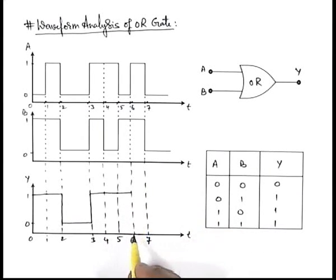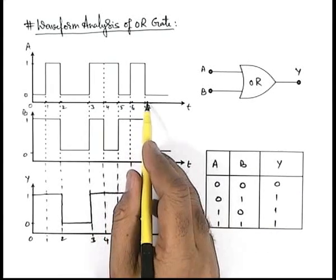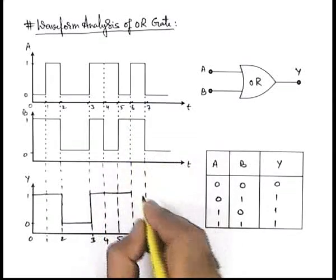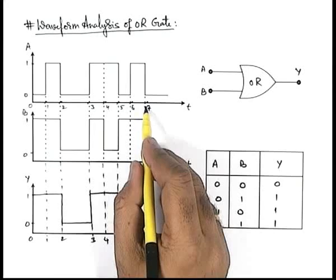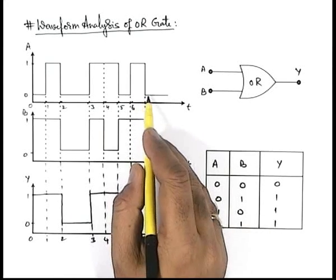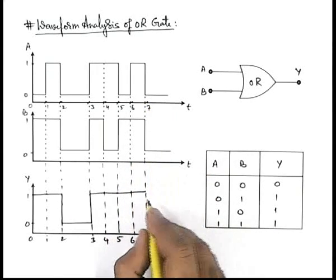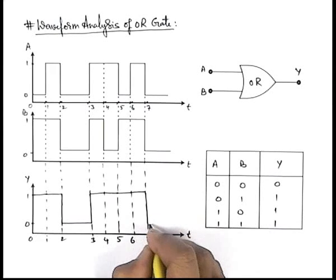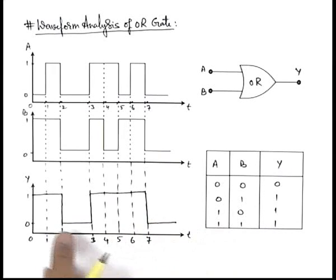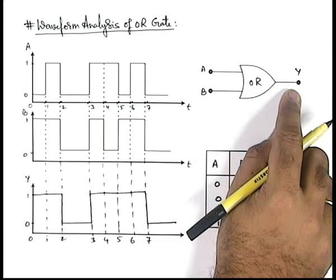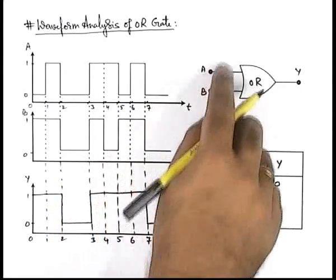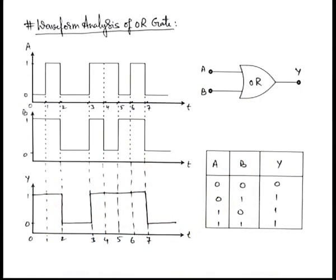Then again from duration six to seven, t6 to t7, both are in one state so this will still be one. And after this instant t7, A is in zero state, B is also in zero state, so if both are low it will also be low. So this is the output waveform which will be getting at output terminal of this OR gate if these two are the input waveforms applied at terminals A and B of this OR gate.